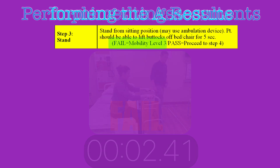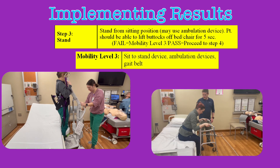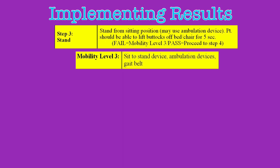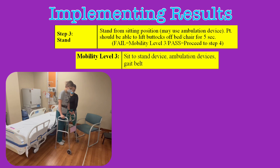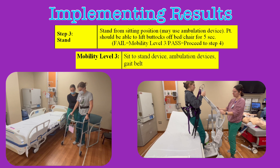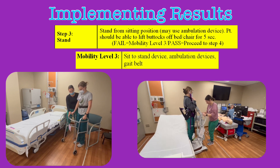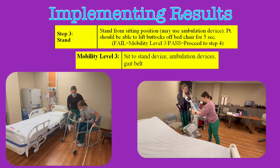If they cannot at least lift their buttocks off the bed for the five count, they fail step three and are designated a mobility level three patient. At level three, the equipment appropriate for use would be a sit-to-stand device or ambulation devices and gait belts. Consider the type of transfer and destination — a transfer to a chair at a 45-degree angle right next to the bed can likely safely be accomplished with a walker and gait belt, whereas a transfer to a stretcher on the other side of the room would be more appropriate for a sit-to-stand device. The safe practices of performing these transfers and use of this equipment are explained in separate videos.